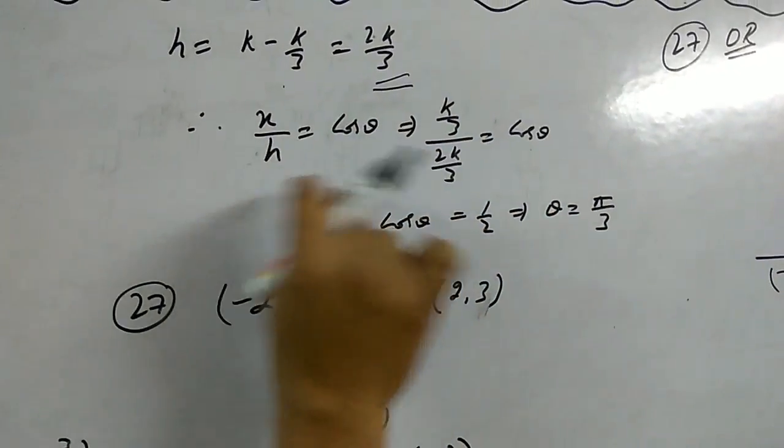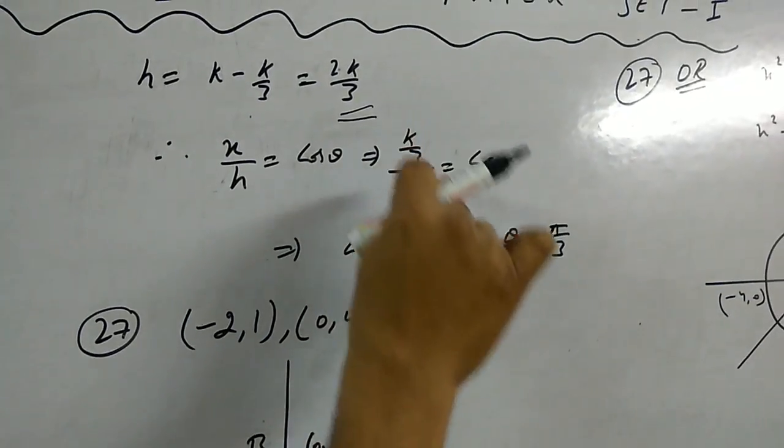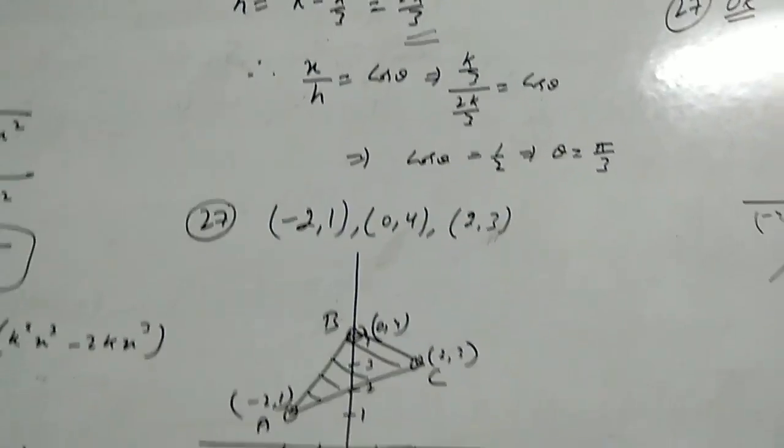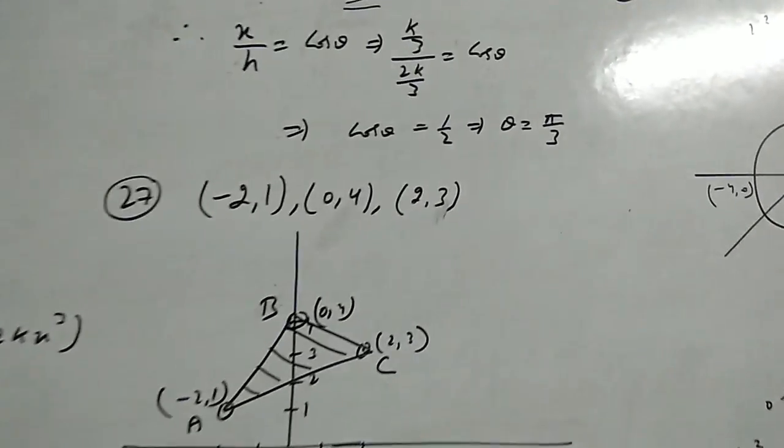x will be k by 3, h will be 2k by 3. They cancel, so cos theta equals half. Cos half is 60 degrees. The second part is proved: theta equals π by 3.